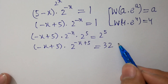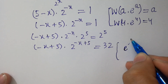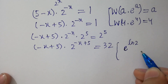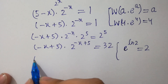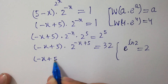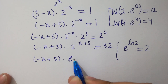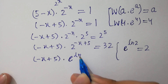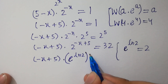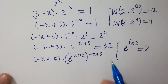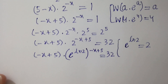Since we know that e to the power natural log 2 equals 2, we substitute: 2 becomes e to the power (natural log 2), so the expression becomes (minus x plus 5) times e to the power (natural log 2 times (minus x plus 5)) equals 32. Now multiply both sides by natural log 2.